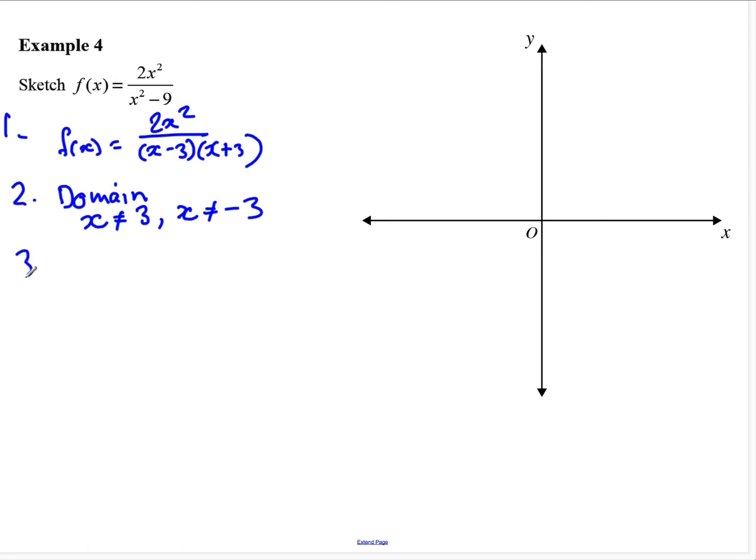So step 3 we should consider if this is an odd or even function. Let's do f(-x) and put that in. So that's 2(-x) all squared, negative x squared minus 9, which equals 2x squared because the negative becomes positive. Again negative x squared is just x squared which is the same as f(x). So therefore this is an even function and it's going to have symmetry.